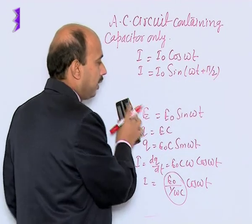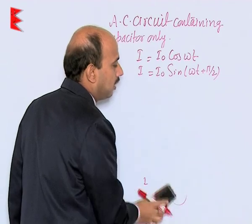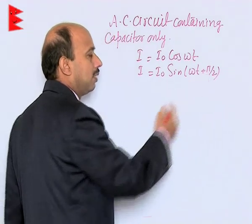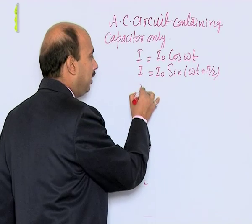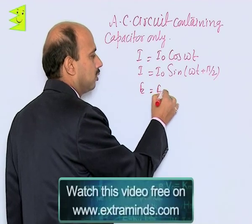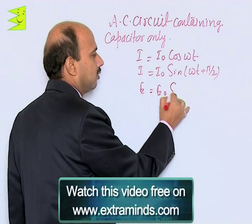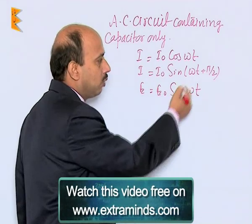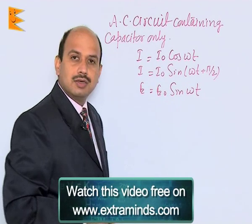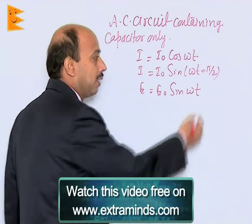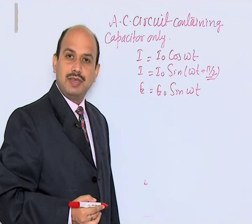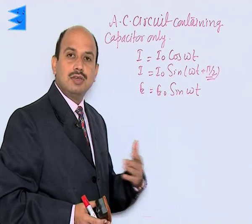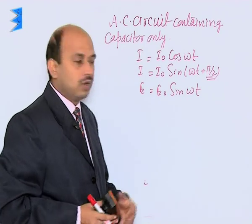In this case, the current is given by sin(ωt + π/2) and the EMF applied was E = E₀ sin(ωt). Looking at these two equations, we find the current is ahead by π/2 in phase angle. So there is a phase difference between current and voltage — the current leads the voltage.